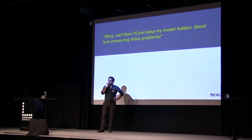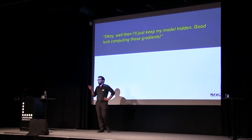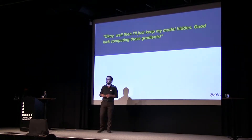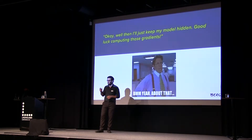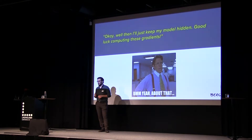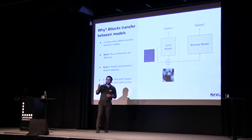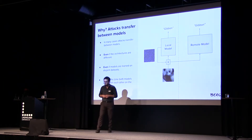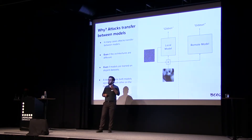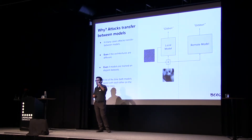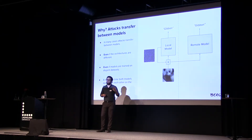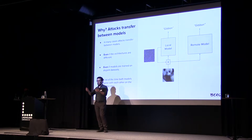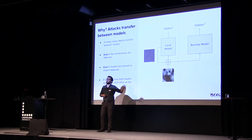When you hear this, your initial thought might be: I'll just keep my model hidden — good luck computing those gradients. Well, it's not that simple. Attacks transfer between models. It doesn't matter if the architecture is different or if your model is trained on disjoint datasets — they still tend to transfer. As long as you have access to at least some part of the training data, you can train a model locally, formulate adversarial examples, and there's a high probability they'll transfer to the remote model where you don't have access to those gradients.